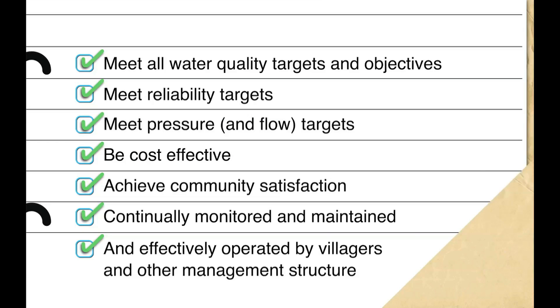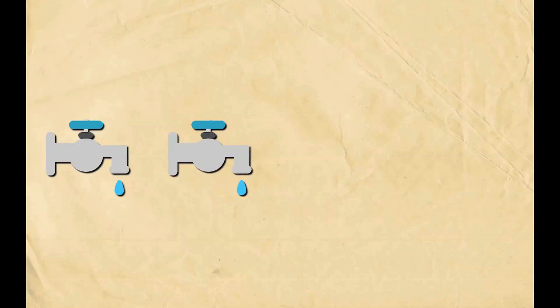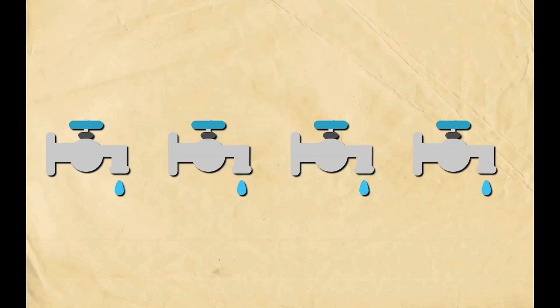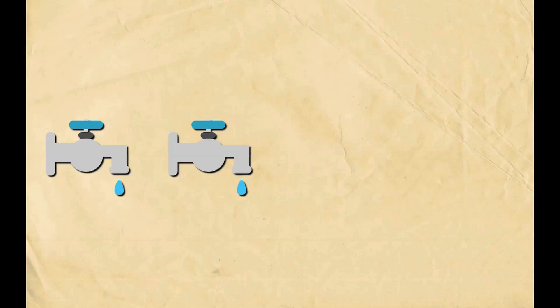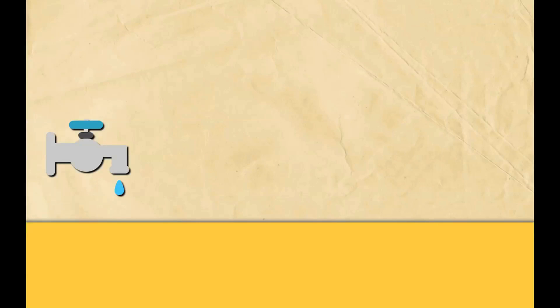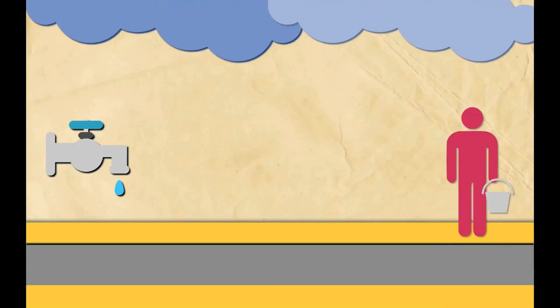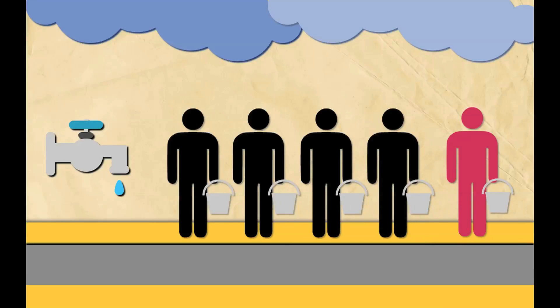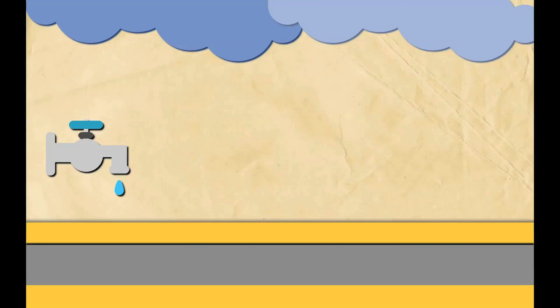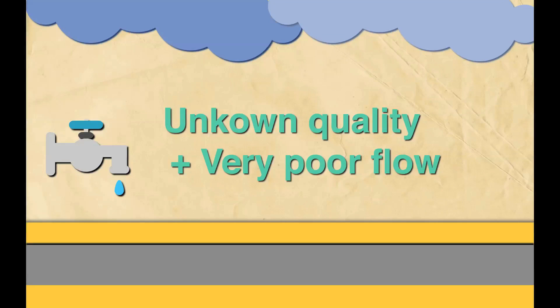In a standard urban family house, there usually is one tap in the kitchen, one in the bathroom, one in the toilet, and another one in the backyard. Now imagine that none of those taps were there and you had to go outside several times to check if taps are working, cross the road in the rain, wait in a queue for 20 minutes to fill one bucket of water. And the water from this tap is of unknown quality and very poor flow. How would you feel about that?